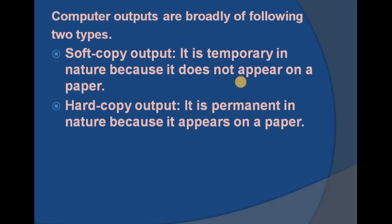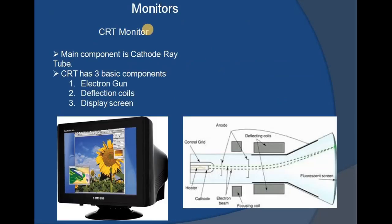A hard copy, such as a printout or photocopy, is permanent. You can make duplicate copies and send them to friends or use them as letters. So computer outputs are categorized into soft copy — information displayed on a screen — and hard copy — information available on paper, such as printouts or banners, which we can touch and feel.